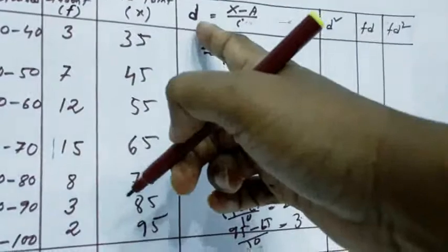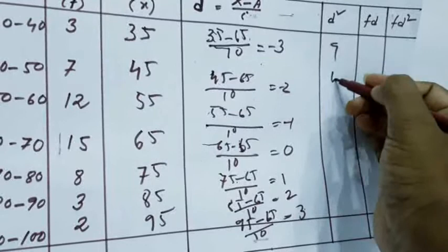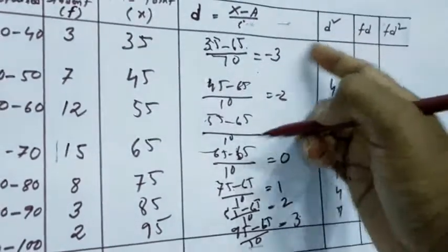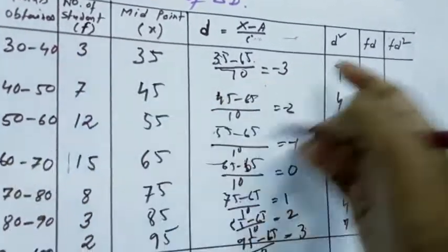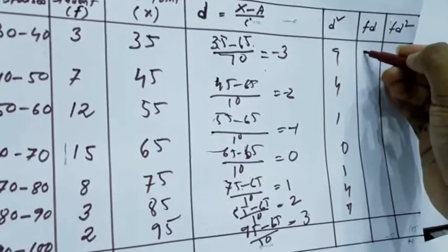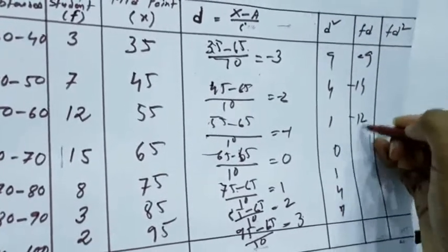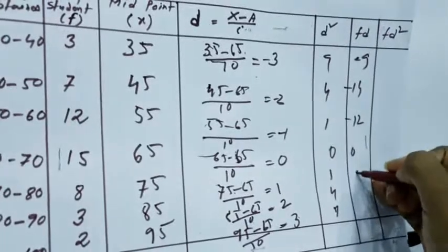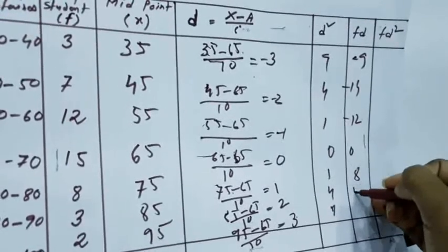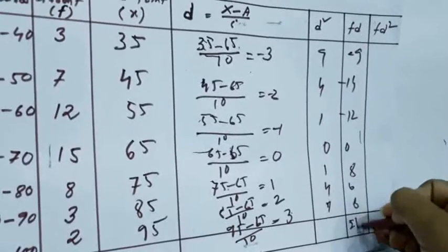Okay. Already, we got the D value. Now D square, this is 9, 4, 1, 0, 1, 4, 9. FD, F into D is minus 9, minus 4, minus 12, 0, 8, 6. The sum of FD is minus 15.